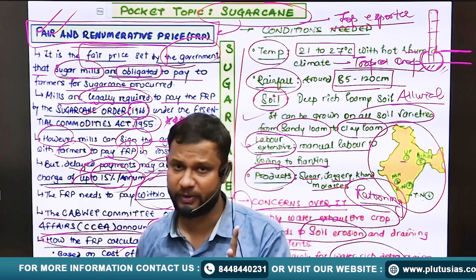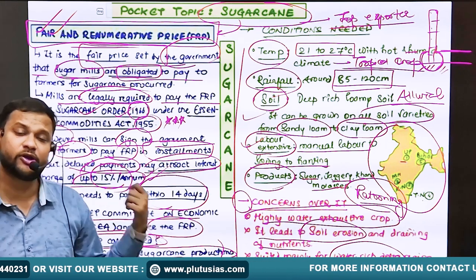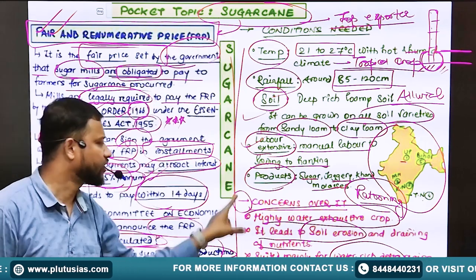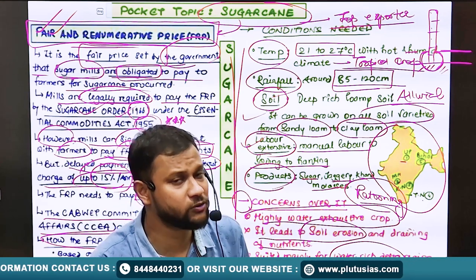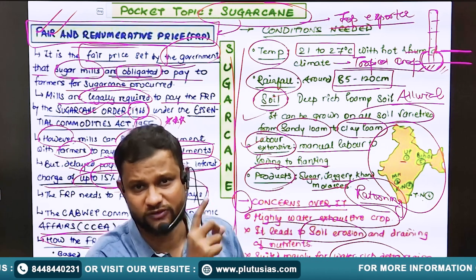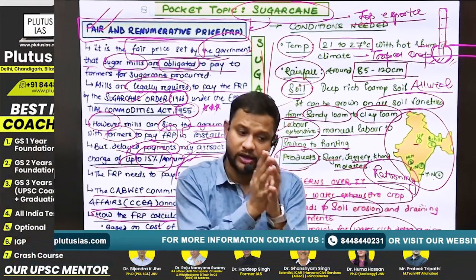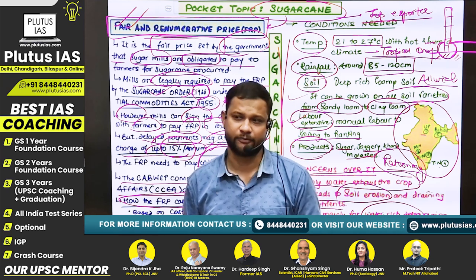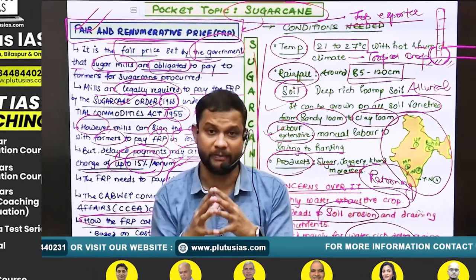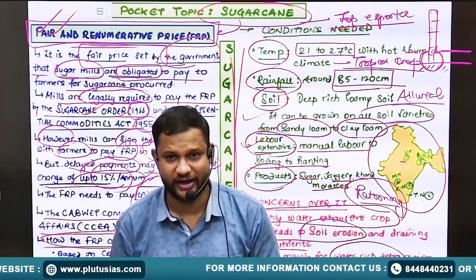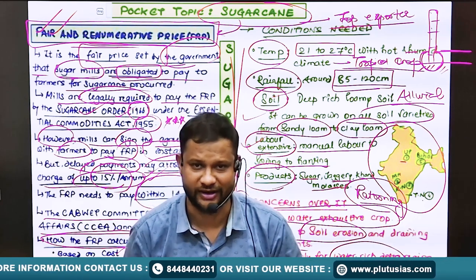The CCEA calculates the FRP based on recommendations from CACP as well, considering sugarcane price availability and related factors. FRP is legally binding, needs to be paid within 14 days, can be paid in installments but with a 15 percent interest rate. Many states are now pondering banning sugarcane cultivation in their state considering water problems, food security issues, soil erosion, and related environmental concerns — as sugarcane is one of the most environmentally damaging crops as of now. That is all about sugarcane for today; thank you and have a good time.